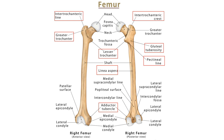Also important is the femur, the long bone of the thigh. On the anterior surface, between the greater and lesser trochanter, we have the intertrochanteric line. On the posterior surface, between the greater and lesser trochanter, we have the intertrochanteric crest. A helpful mnemonic: 'crest in the back, like a crack' — your butt crack is posterior, so the intertrochanteric crest is on the posterior aspect of the femur.